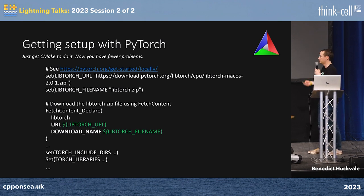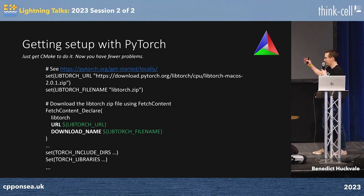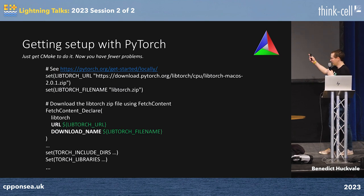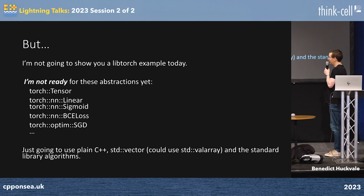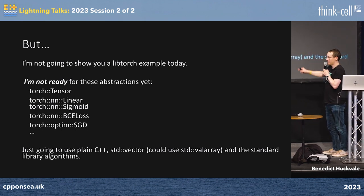The thing to use is obviously PyTorch, and you can use LibTorch if you're doing C++. You can make it easy for yourself with CMake to set it all up. But actually today I'm not going to use that in any of my examples, because I'm not really ready for these abstractions. I want to know what's going on, so I'm going to do it without using those — just use plain C++, std::vector, and the standard library algorithms.